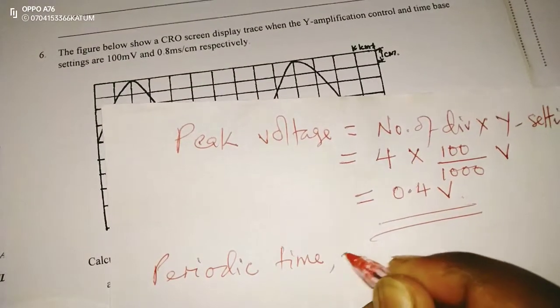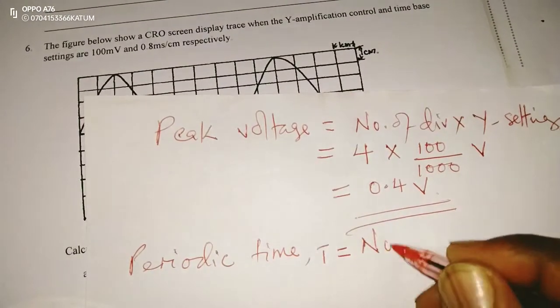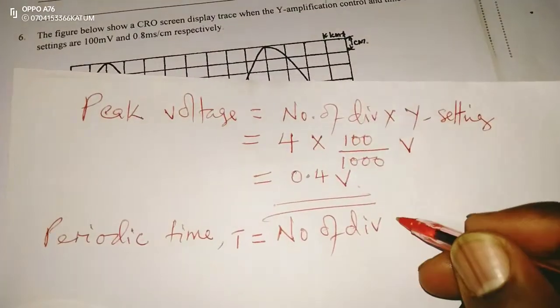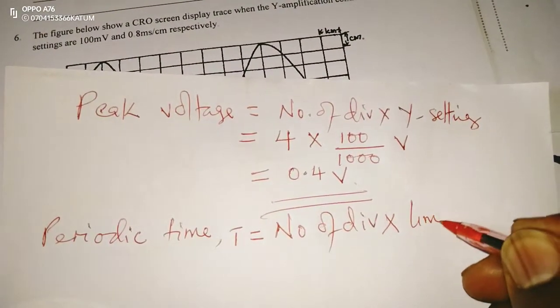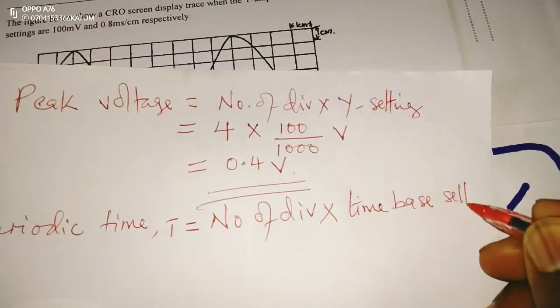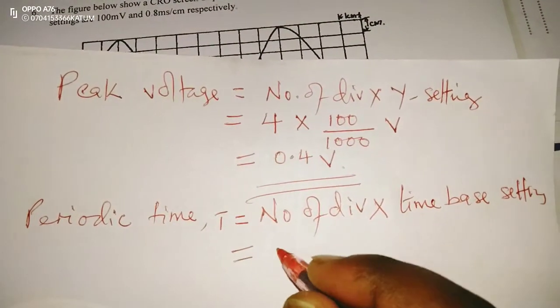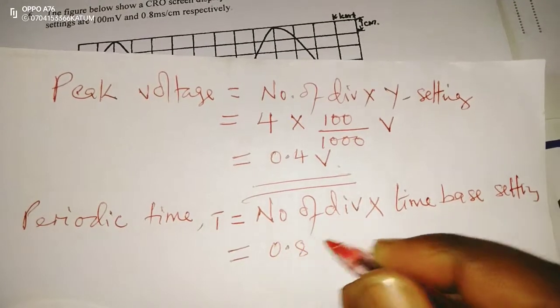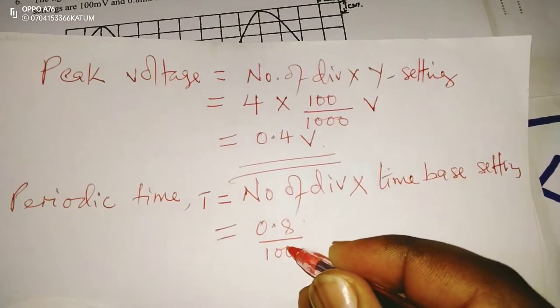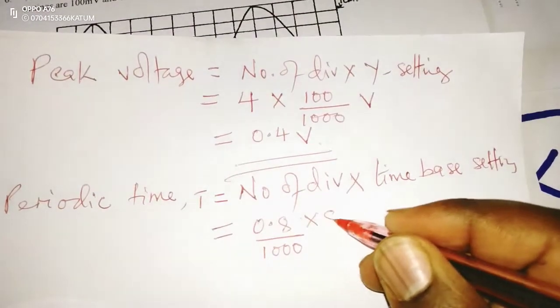So, periodic time, or rather period T, which will be given by the number of divisions in one complete cycle multiplied by the time-based setting. So, the time-based setting is going to be 0.8 milliseconds, which means we have to divide it with 1000 to make it seconds, times 8 divisions.